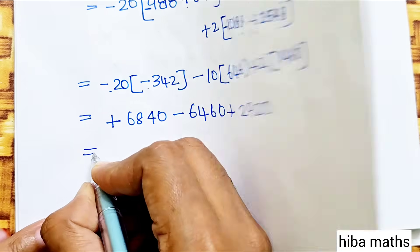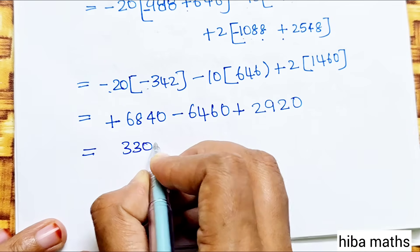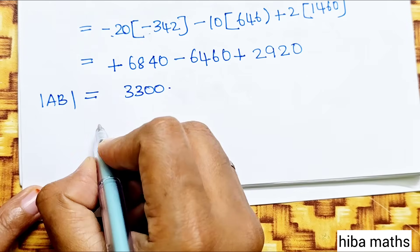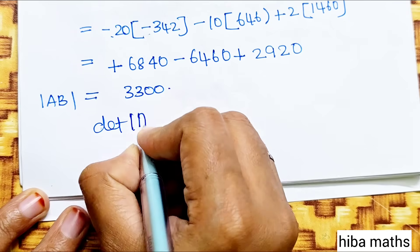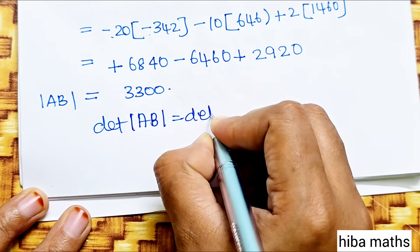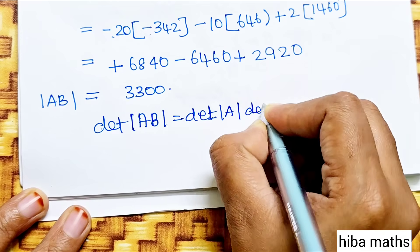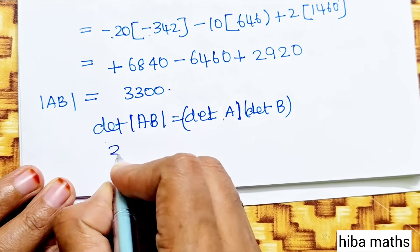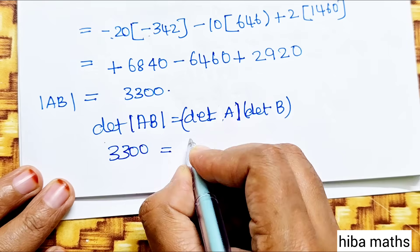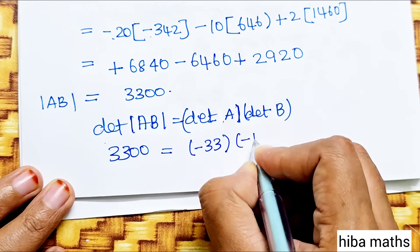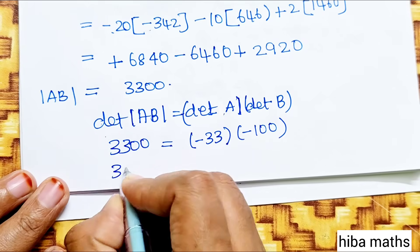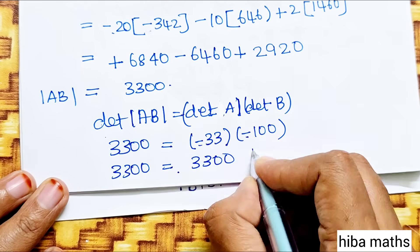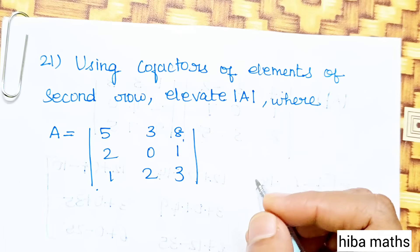The answer for det(AB) comes to 3,300. The modulus of A is −33 and modulus of B is −100. Multiplying: (−33) × (−100) = 3,300. Since det(AB) = det(A) × det(B) = 3,300, hence proved.